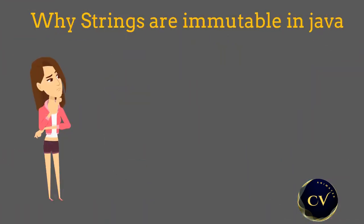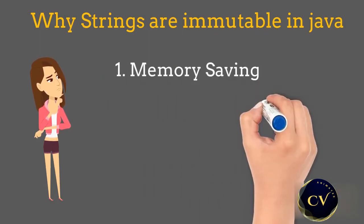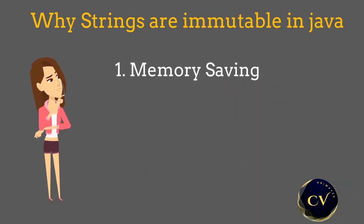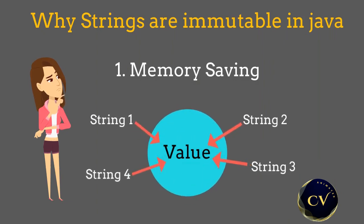Now let's understand why Java developers decided to make strings immutable. The first reason is to save memory. When we create 10 objects with the same value, instead of creating 10 different objects, Java will create only one object in the string pool and all 10 objects will point to it. So it saves a lot of memory.